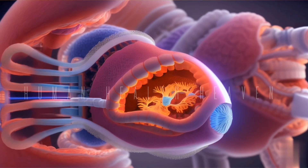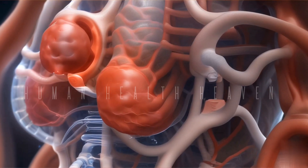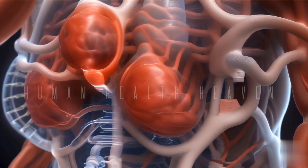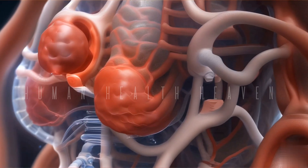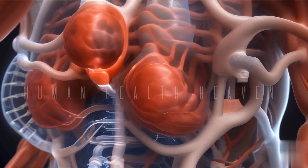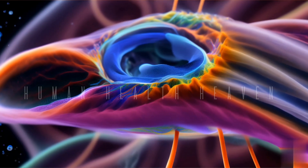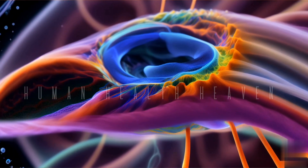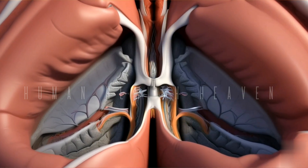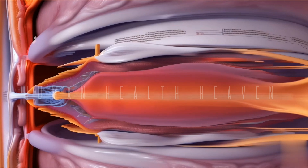Fluid-filled space: between the parietal and visceral layers, there is a thin fluid-filled space known as the pleural cavity. This fluid acts as a lubricant, reducing friction during respiratory movements and allowing the lungs to expand and contract smoothly. Attachment and support: the parietal pleura is attached to the chest wall, diaphragm, and mediastinum, the central compartment of the thoracic cavity. It provides support and stability to the lungs within the thoracic cavity.